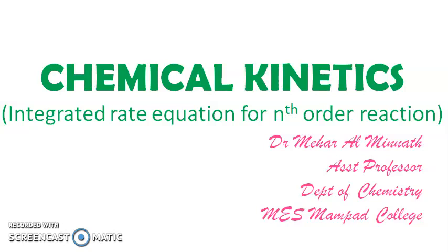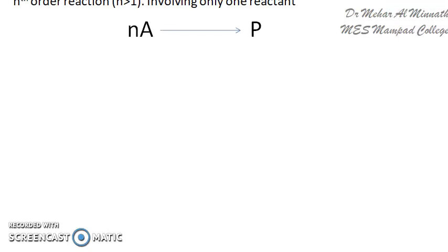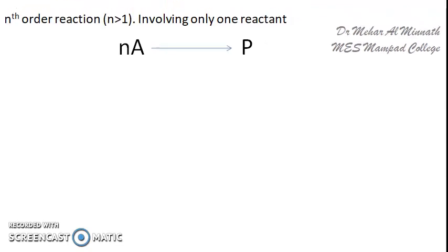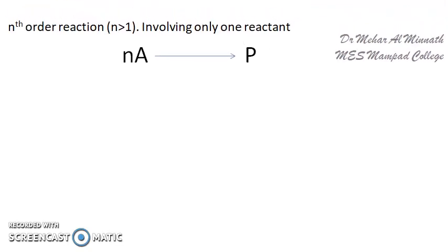The equation which we arrive at can be used for all reactions whose order is not 0 and 1. So for 0 and 1 we have to specifically use the integrated rate expression for those particular order reactions, but for order 2 and above — 2, 3, 4 — we can use the equation which we are going to derive.